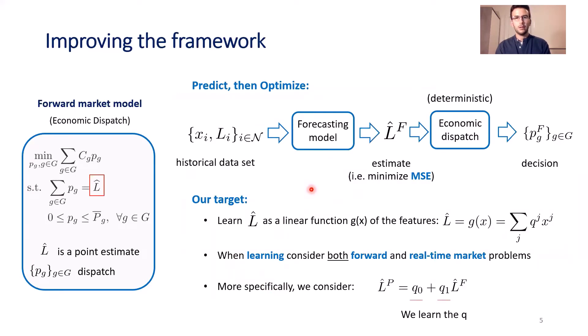The predict-then-optimize framework in this context proceeds as follows. We have a historical dataset with samples of true net demand and contextual information, which we use to produce an estimate that usually minimizes the mean square error. With this estimate, we put it into an economic dispatch to produce the decision variables that are the generation levels of each generator. Our target is to improve this procedure so that we learn the estimate as a linear function of the contextual information. While learning, we want to consider both the forward and real-time market problems.